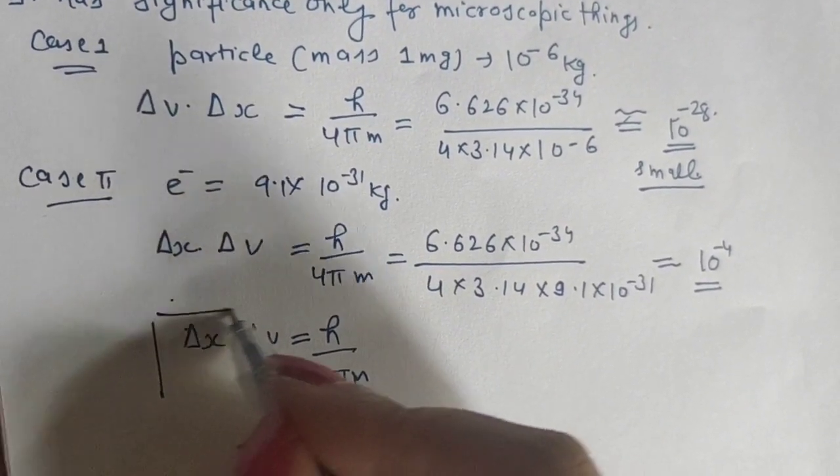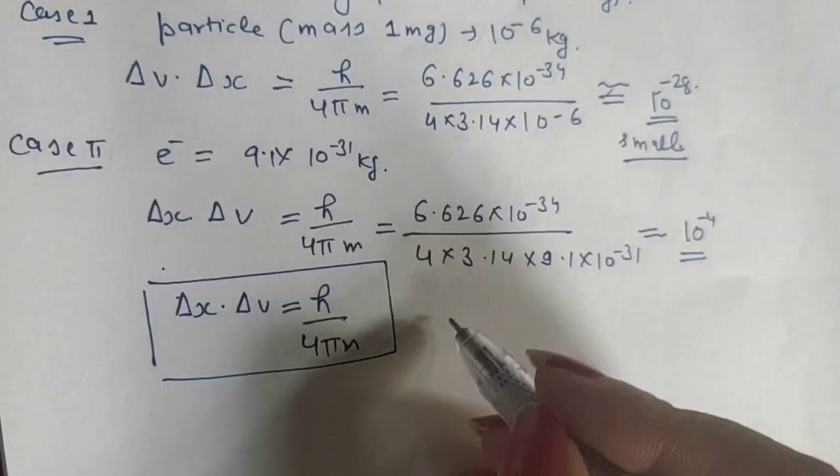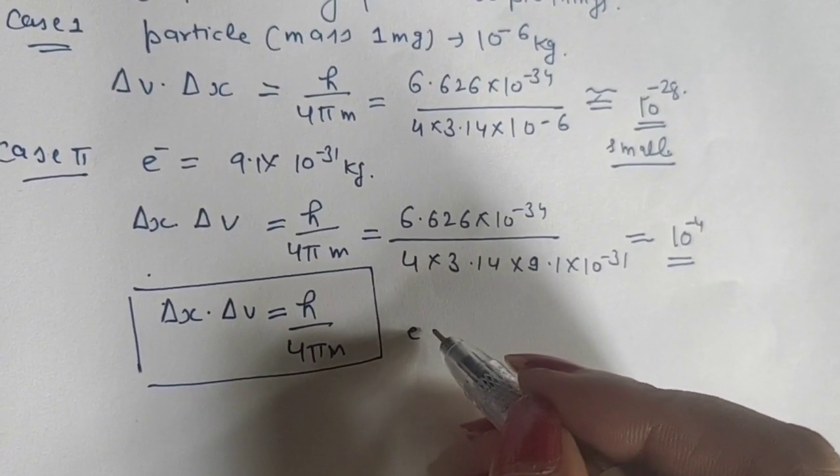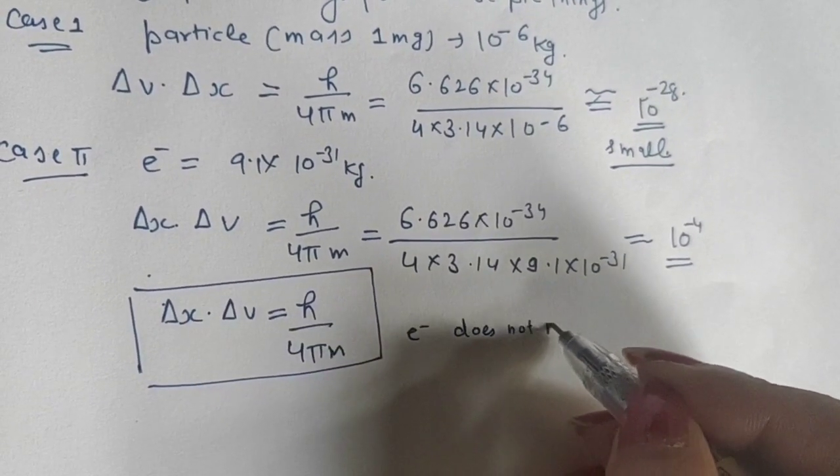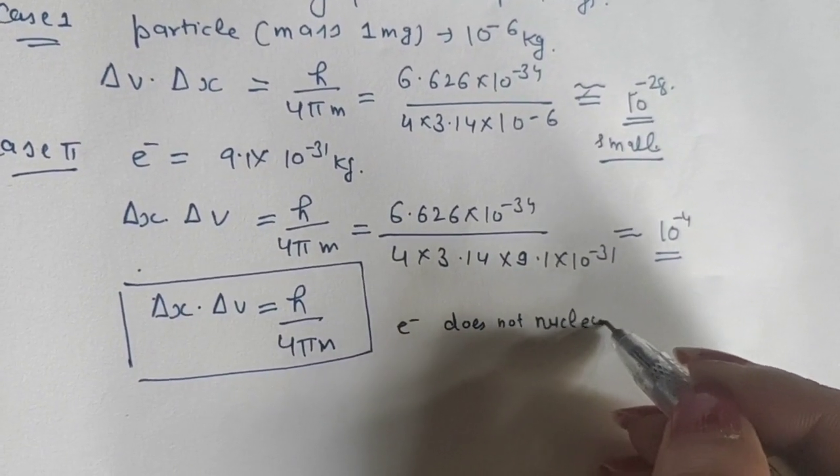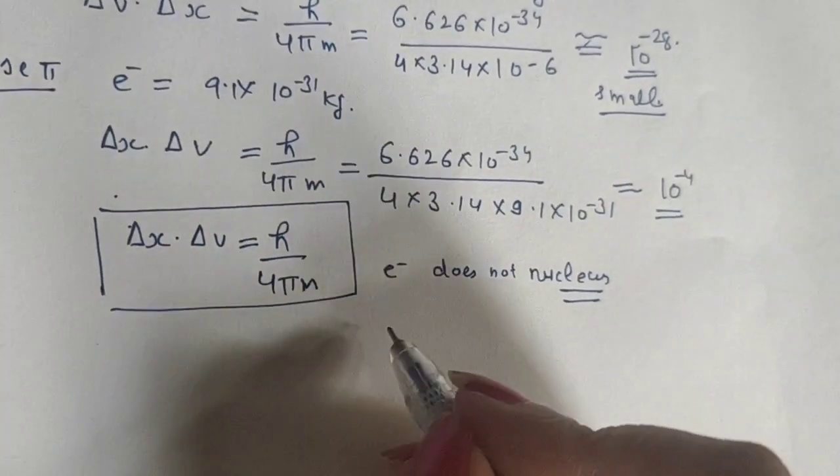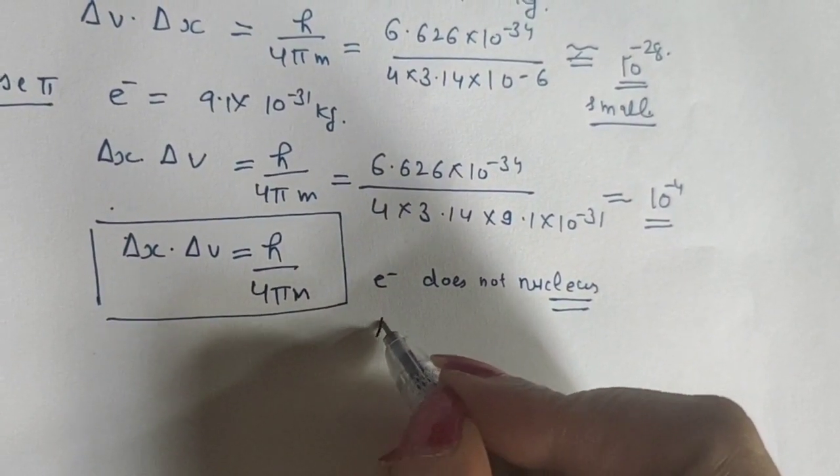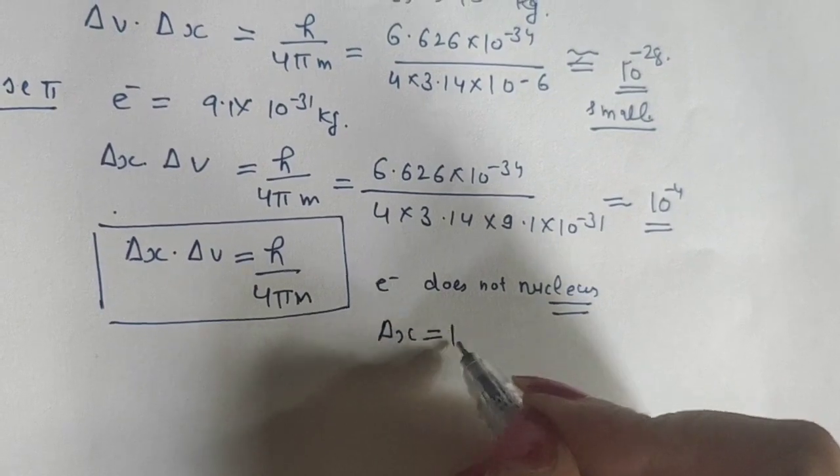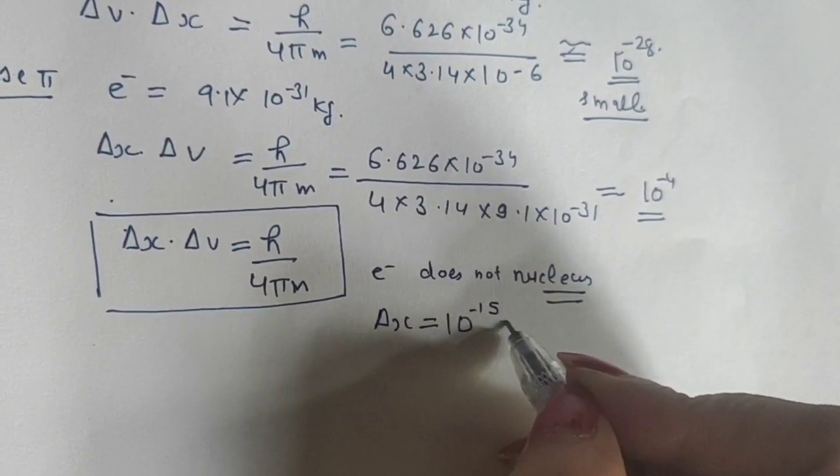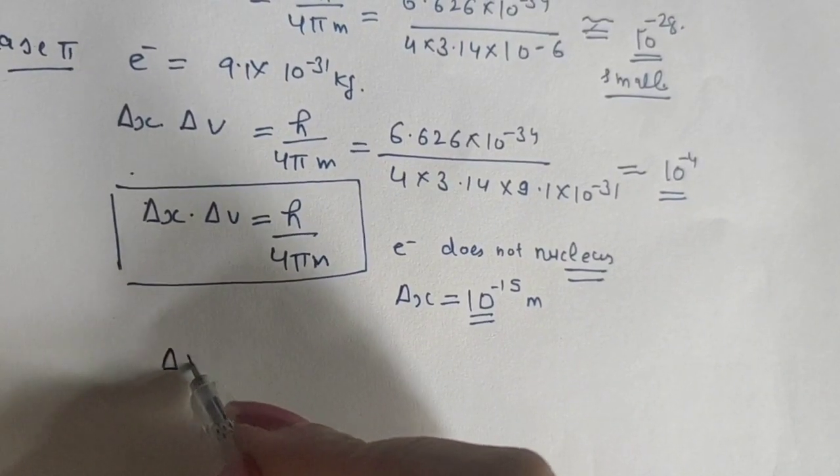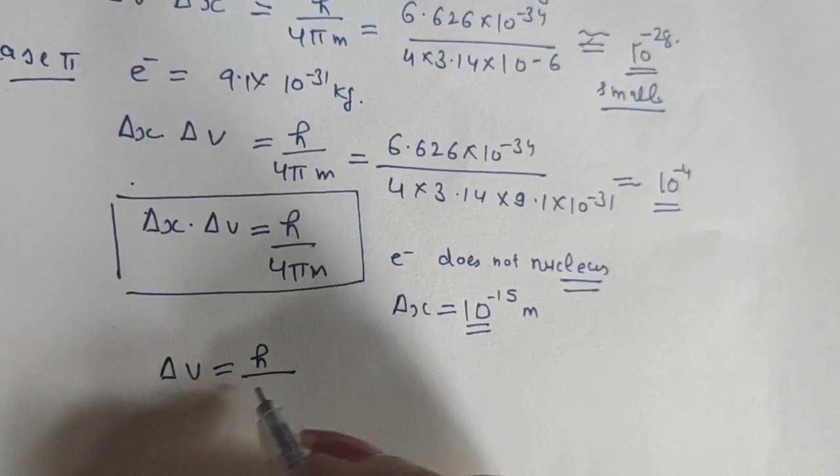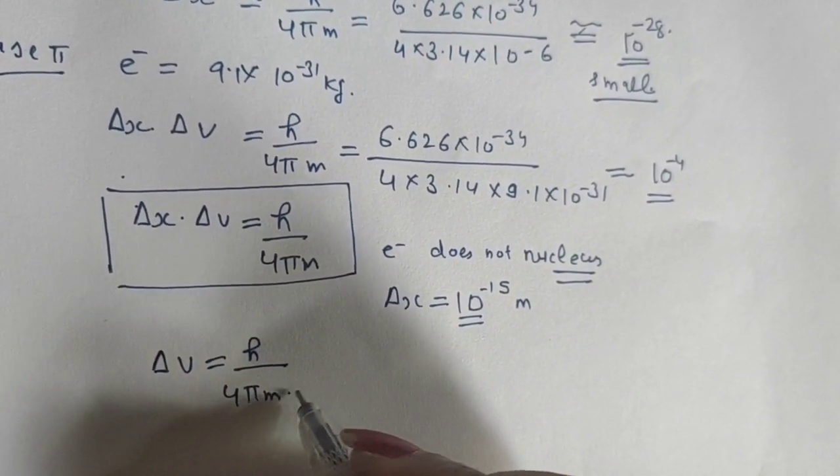We can explain why electrons do not exist in the nucleus. If we suppose the electron is in the nucleus of diameter Δx, we can find Δv using the formula: Δv = h/(4πm·Δx).